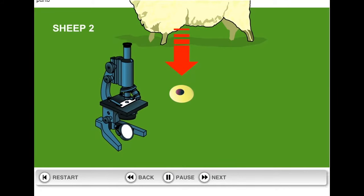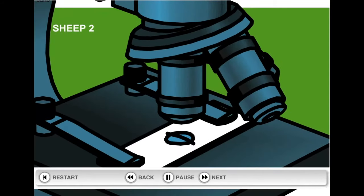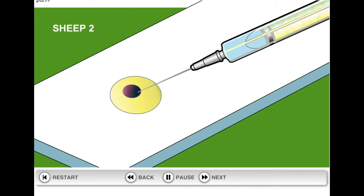Using techniques developed in human fertilisation treatments conducted at a microscopic level, the nucleus from Sheep 2's ovum was removed, or enucleated, to make sure that none of Sheep 2's DNA and genotype could be passed on to the next generation.